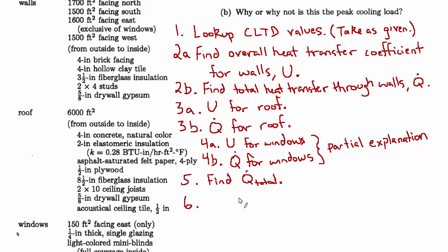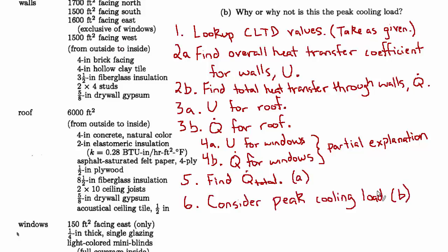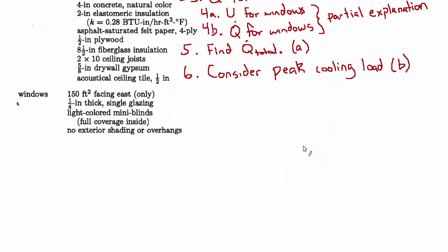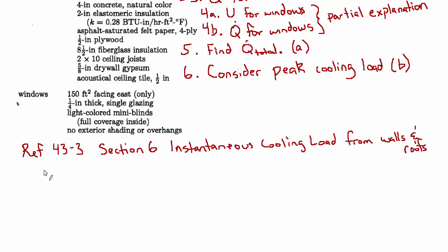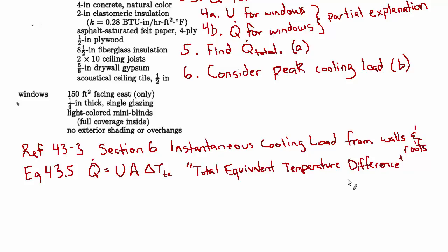Lastly, we'll give thought to part B — why or why not is this the peak cooling load. For background, start with section 43.3 of the MERM on instantaneous cooling load from walls and roofs. The governing equation is 43-5: total heat transfer Q-dot equals the overall heat transfer coefficient times area times delta-T sub TE, the total equivalent temperature difference. This method determines the instantaneous heat gain. Delta-T sub TE depends on construction type, geographical location, time of day, and wall orientation — read from extensive tabulations.